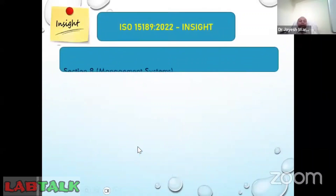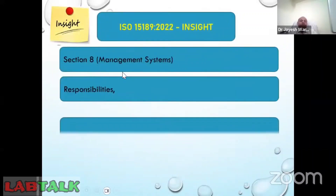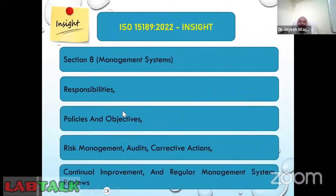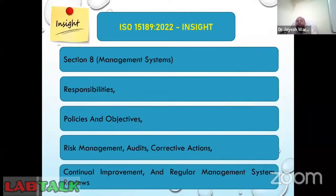Clause eight includes management system responsibilities, covering management system policies and objectives, risk management within the management system, audits, corrective actions, continual improvement plans, and regular management review meetings. This was the overview of ISO 15189:2022.